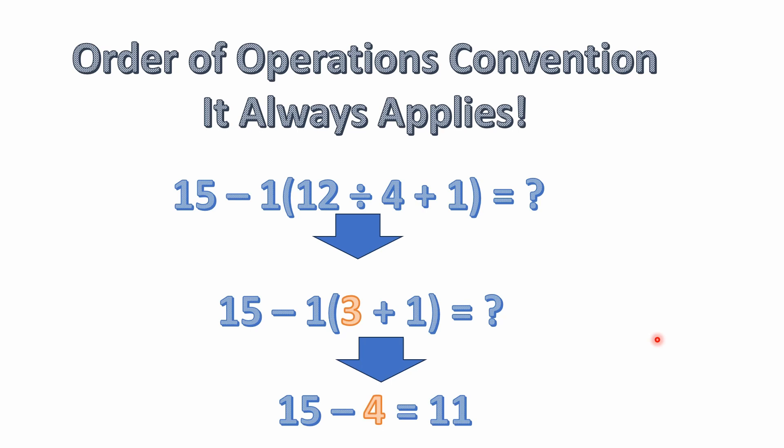We do have parentheses here, so we have to look inside the parentheses and solve everything using the order of operations inside them. Inside we have 12 divided by 4 plus 1. The highest order operation in there is division, because division has precedence over addition.